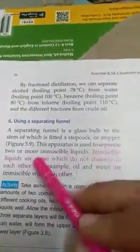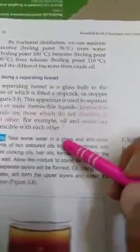This nozzle type and stopper apparatus is used to separate two or more immiscible liquids. Immiscible liquids which are not dissolved in the water—oil will float on the surface of the water. We will use these liquids to separate from the separating funnel.